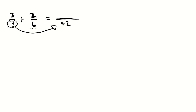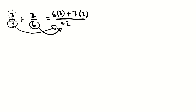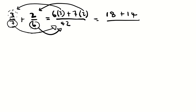Then ask yourself how many 7s go into 42 — there are 6 sevens in 42, so you multiply 6 by the numerator 3. Then ask how many 6s go into 42 — there are 7 sixes, so you multiply 7 by the numerator 2. You multiply each numerator by the number of times its denominator goes into 42. So 6 times 3 equals 18, and 7 times 2 equals 14, with 42 as the denominator.